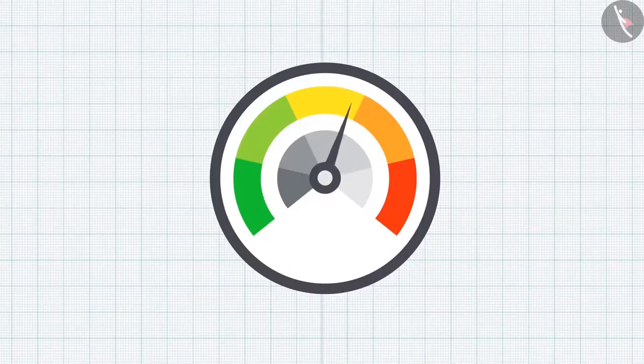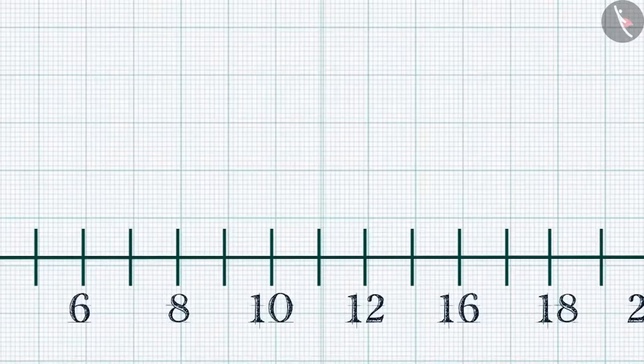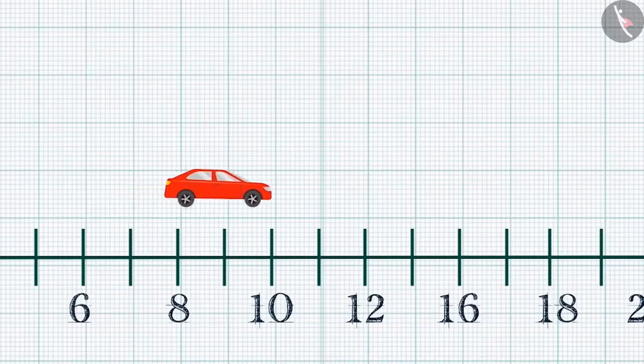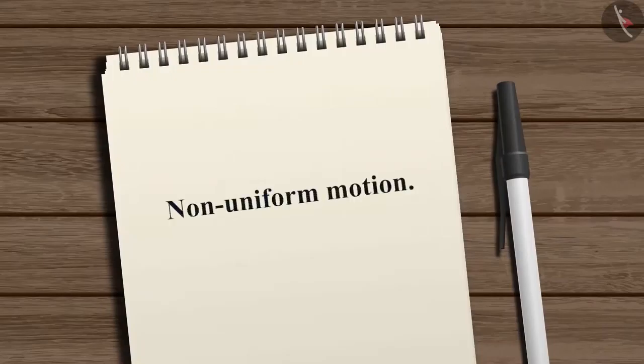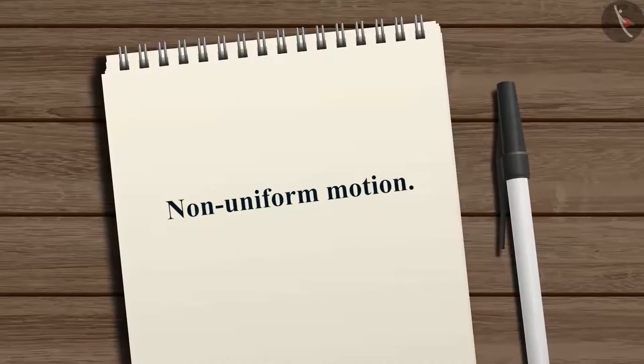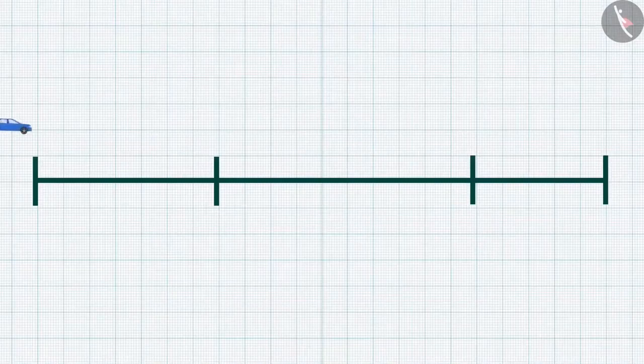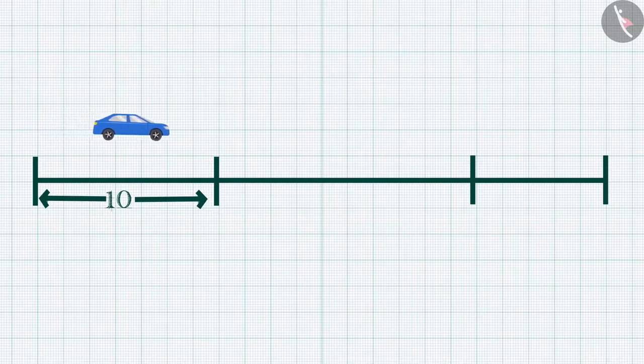But most of the time, speed is not constant. It sometimes increases, decreases, or remains constant for equal time intervals. This type of motion is known as non-uniform motion. For example, this blue car covers 10 meters in the first second, 15 meters in the next second, and 8 meters in the third second.